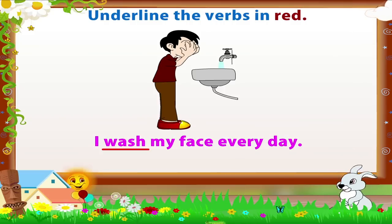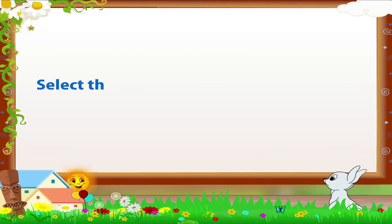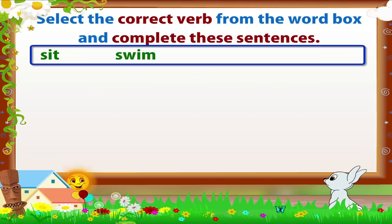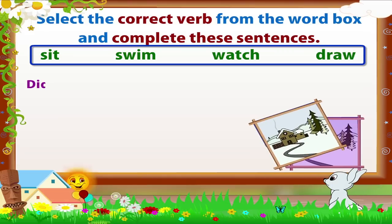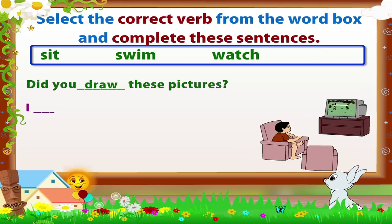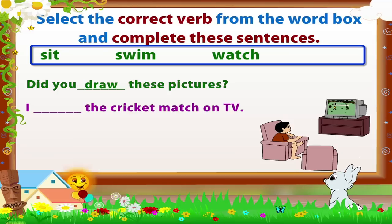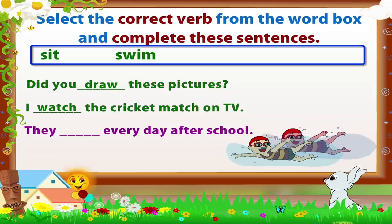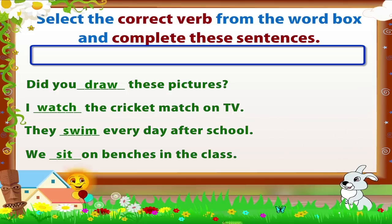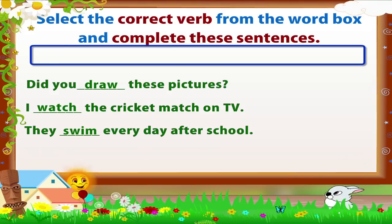That was easy! Here are some more sentences with blanks. Now let us select the correct verb from the word box and complete these sentences. The words are: sit, swim, watch, draw. 'Did you draw these pictures?' 'I watch the cricket match on TV.' 'They swim every day after school.' 'We sit on benches in the class.' Excellent! You do know your verbs!